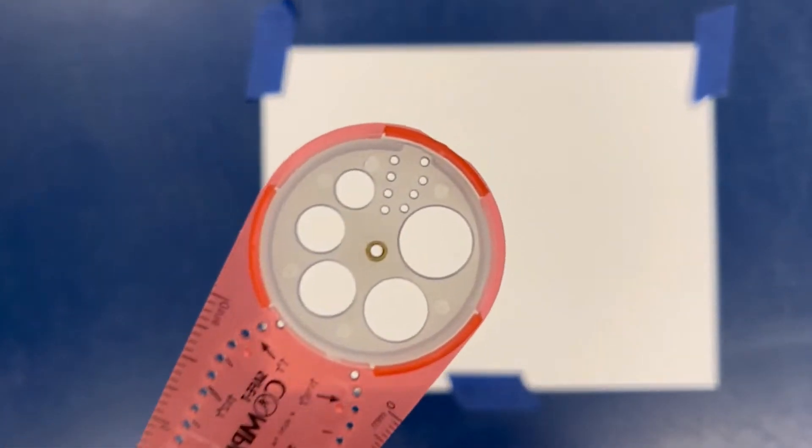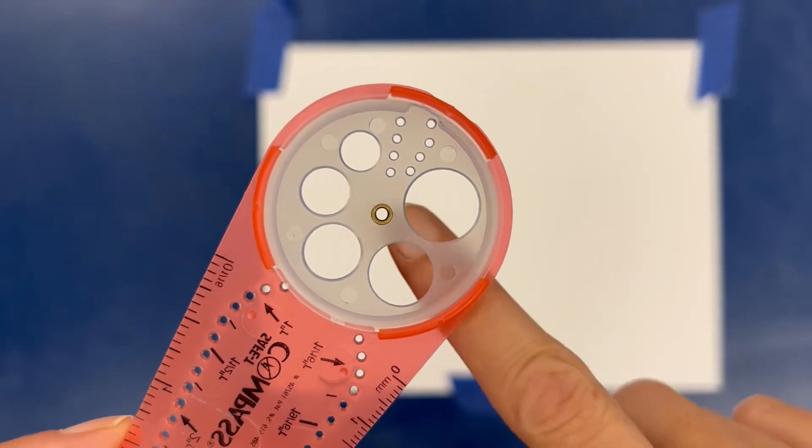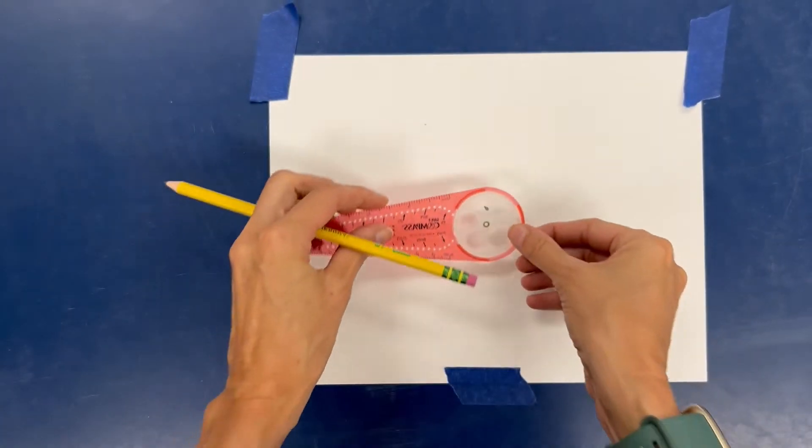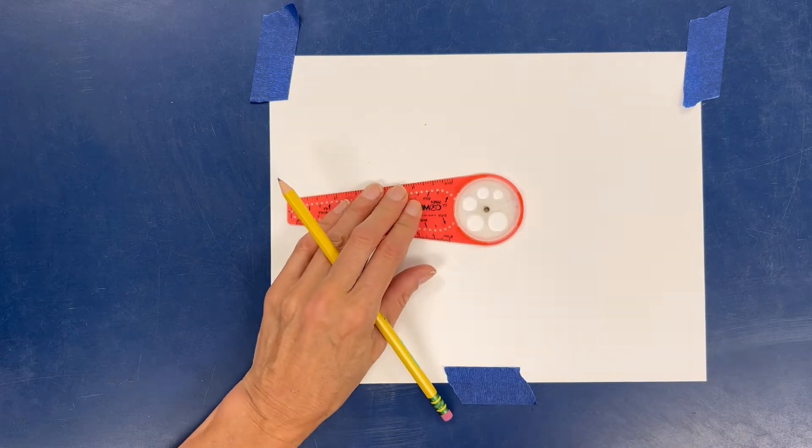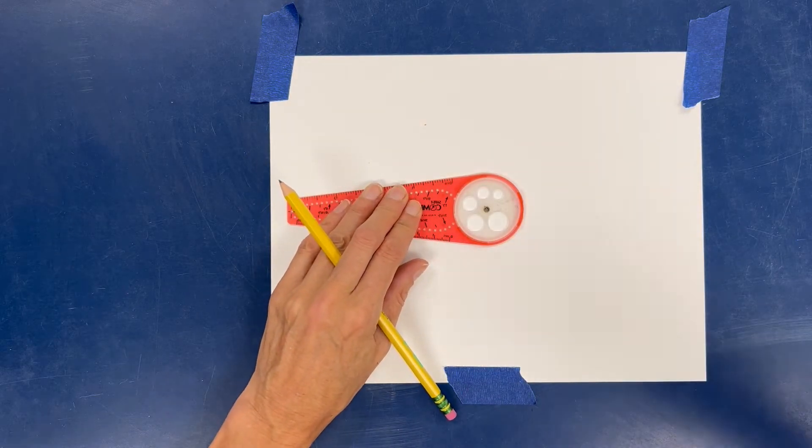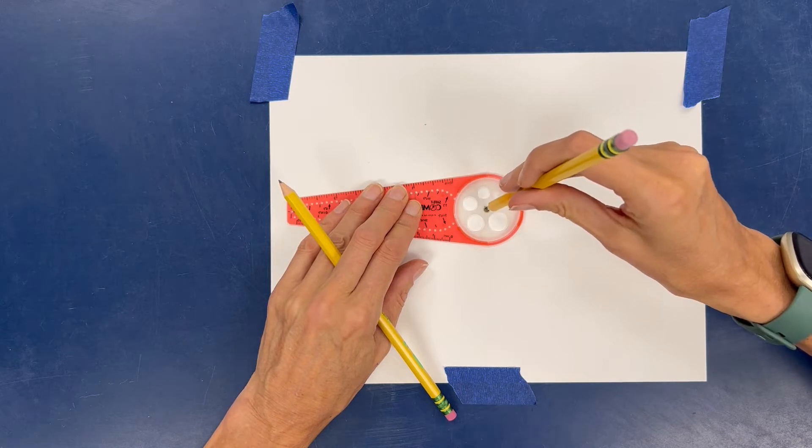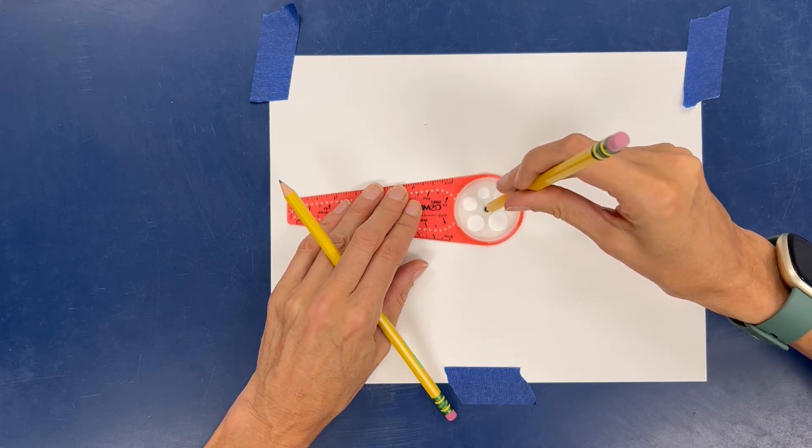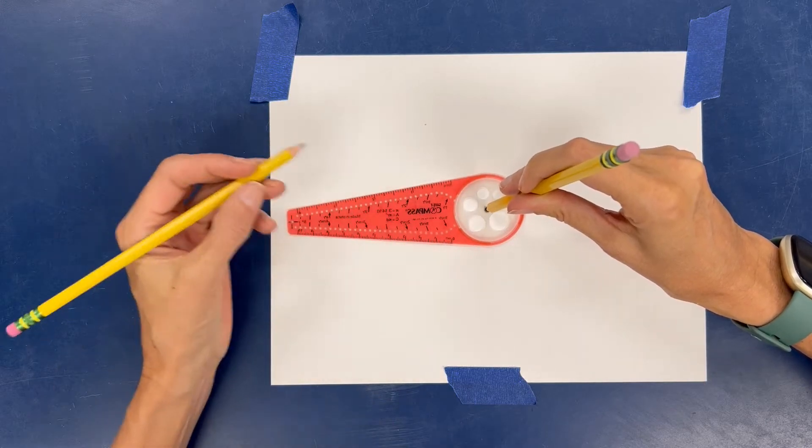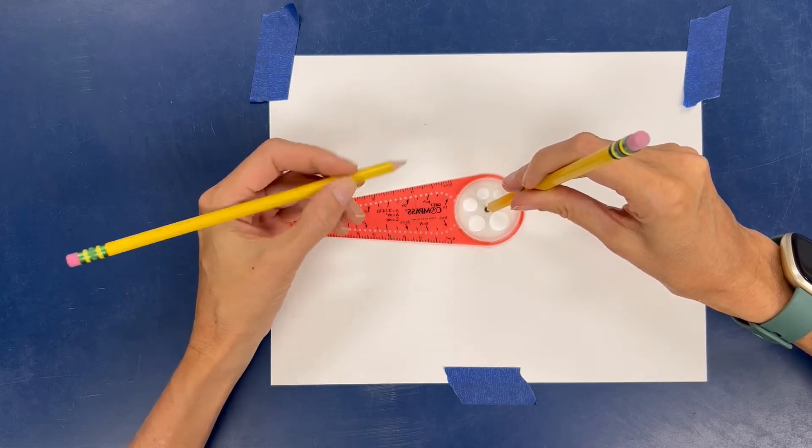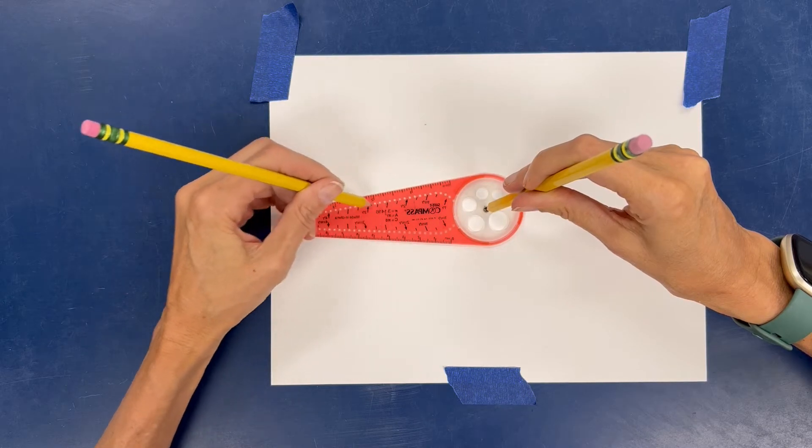We're going to take this little grommet that's right in the middle right here and line it up on that dot. Now with the hand that I don't usually draw with, for me that's my left hand, I'm going to put a pencil right here right in the middle.